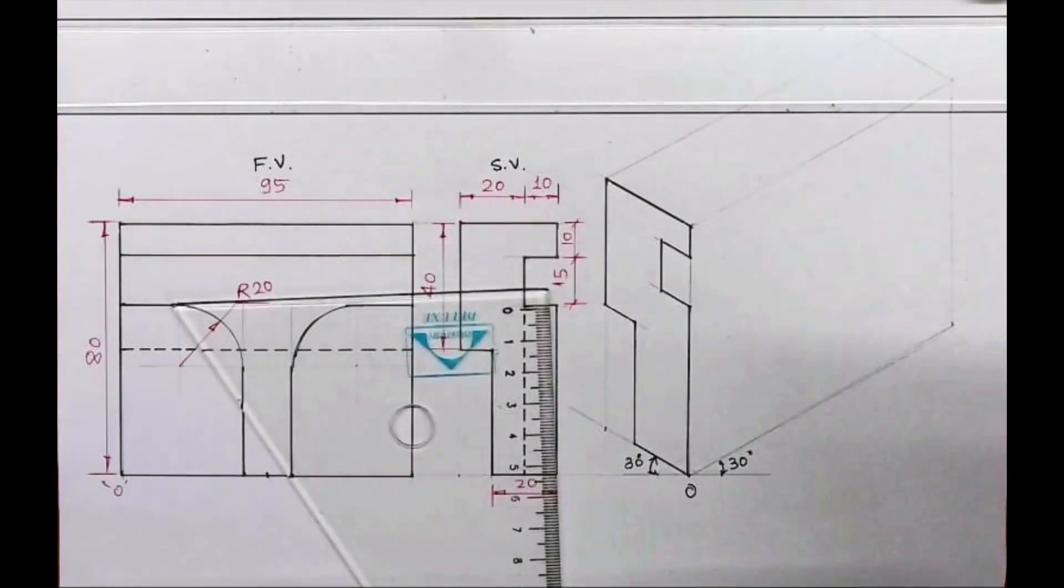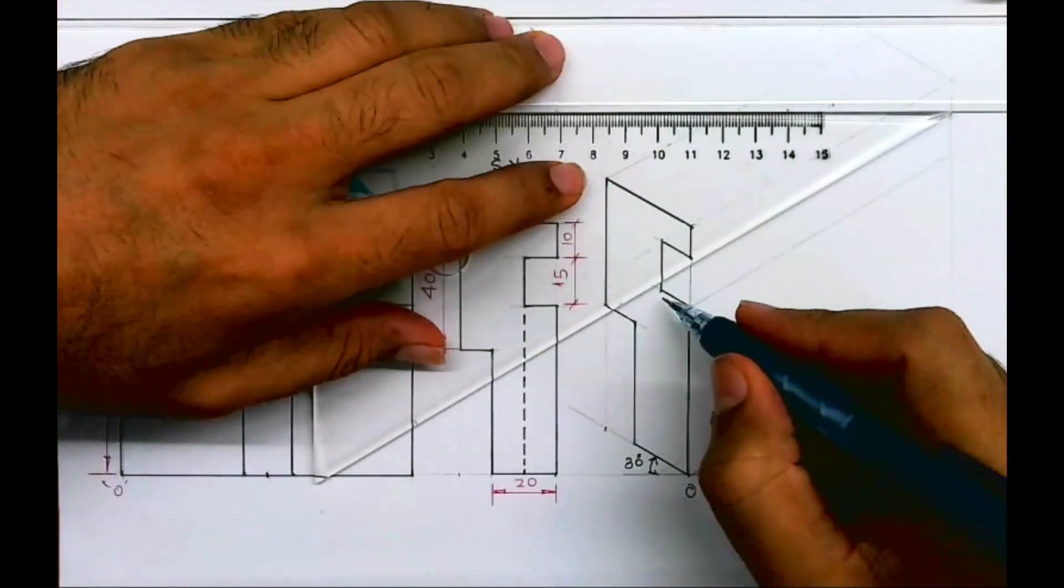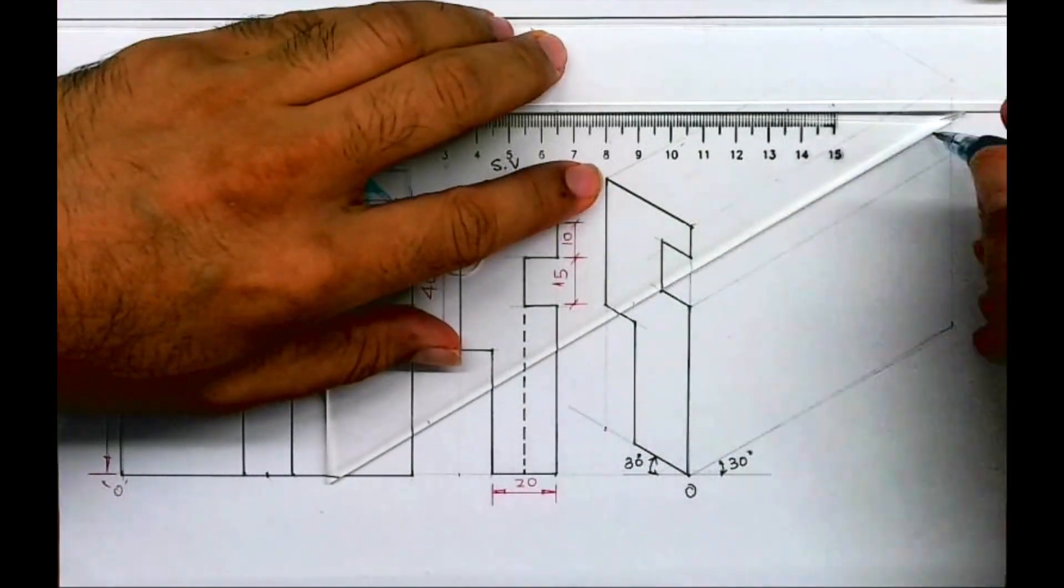Now we take this entire part behind by 95. Whatever is there on the left side, the same thing will be there on the right. With that concept.